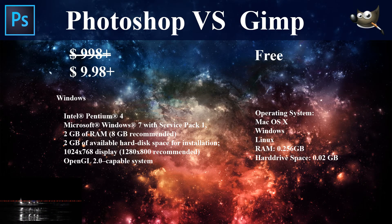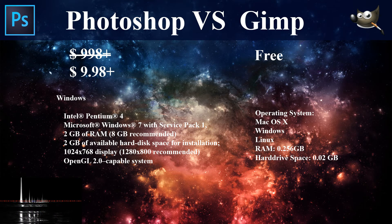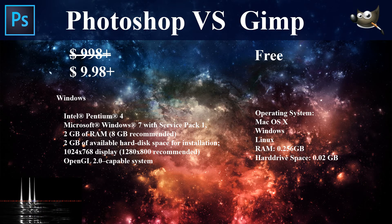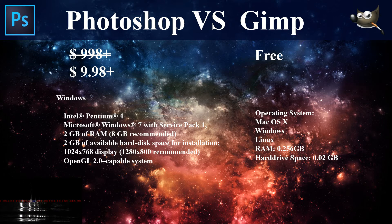Let's talk about system requirements. This is a small difference, but if you are using a PC built in the late 2000s you'll still be able to run Photoshop. However, GIMP is a lighter software — it requires less system resources. So if you're on a very old PC, go with GIMP. If you're using any moderately modern PC, you're fine with Photoshop.